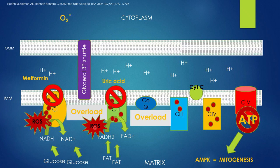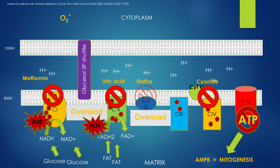Statins indirectly block coenzyme Q. There are different substances that block the complexes, but be mindful that the closer to the motor you block, the more deadly the substance is. Metformin, uric acid, and statins are not that deadly because they don't block C4. If you block C4, you're in trouble. What substance blocks it? Cyanide. When you eat cyanide, you die right away because there is no production of ATP and no compensatory mechanism.